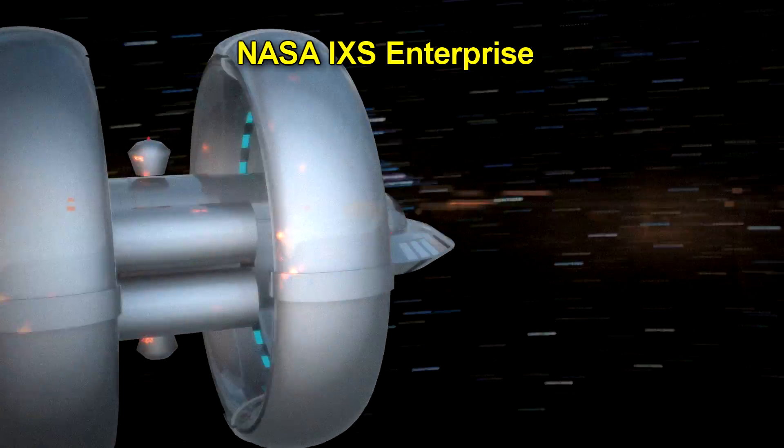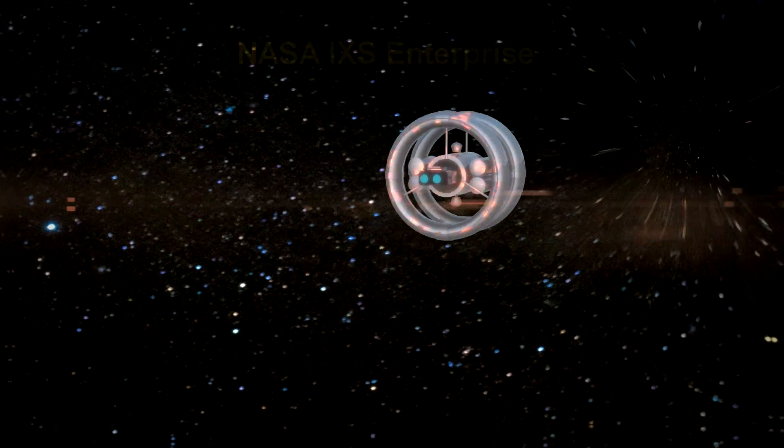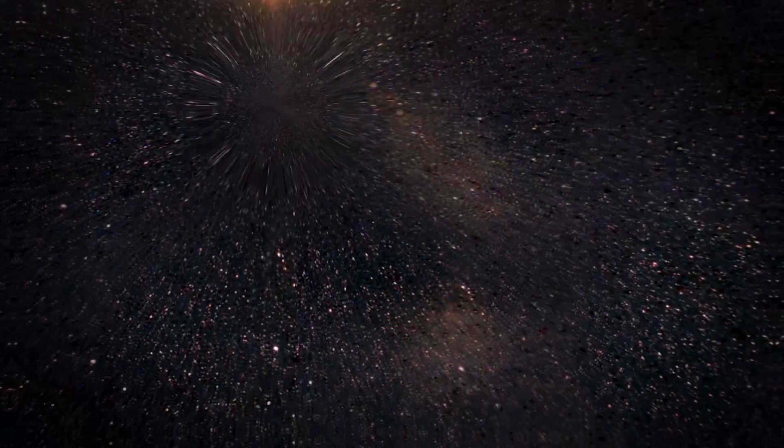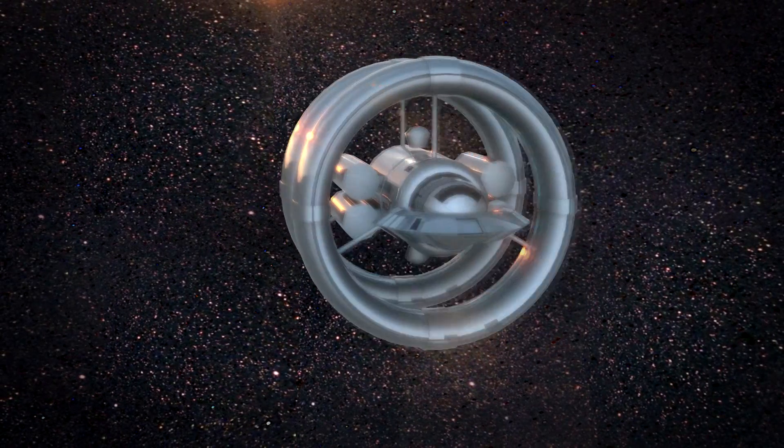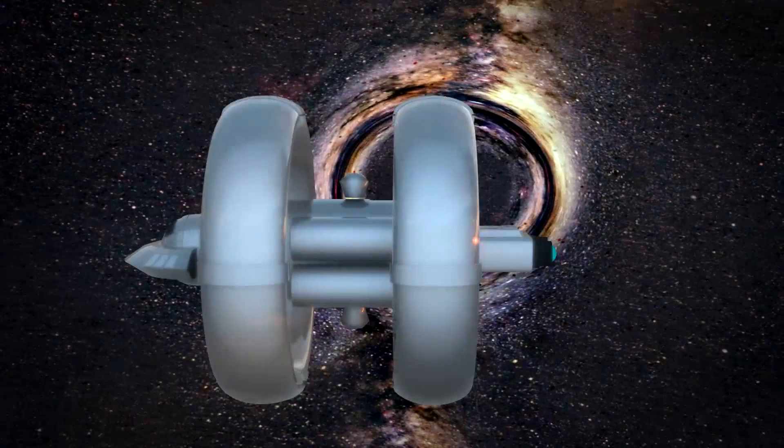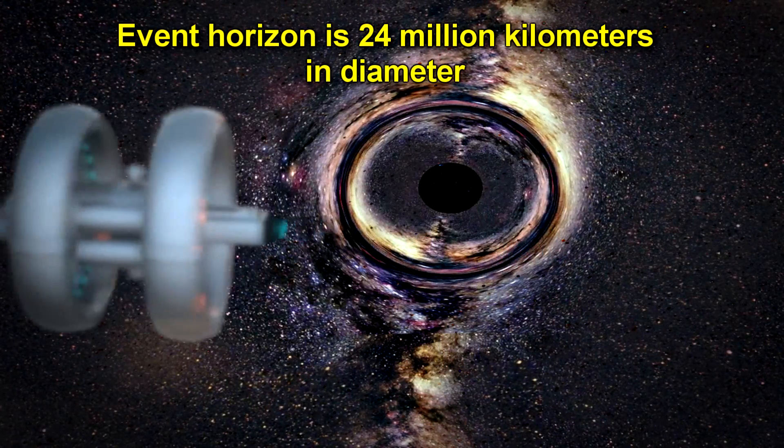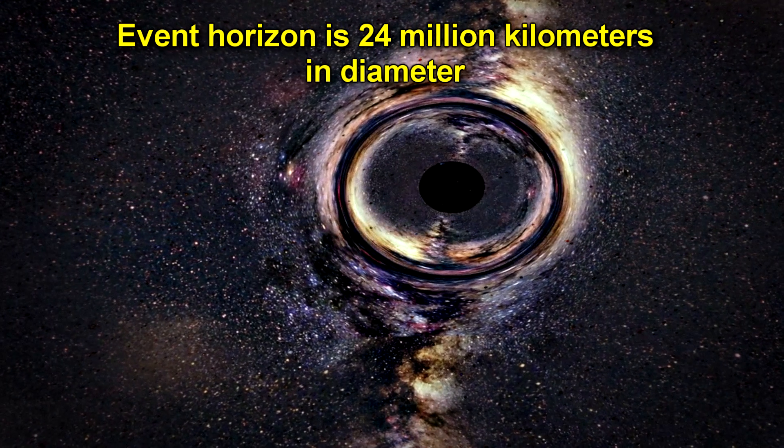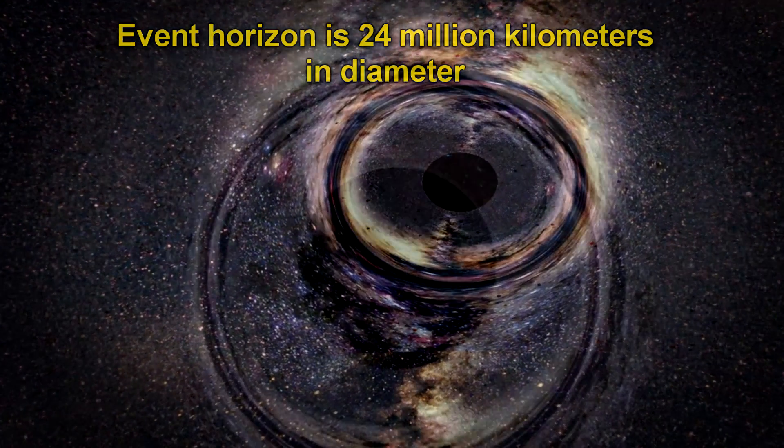We'll use NASA's hypothetical i-axis enterprise to get to Sagittarius A. It'll take us three years at a warp speed of 9,000 times the speed of light. When we arrive, we see that its event horizon is about 24 million kilometers in diameter, which is about 17 times the diameter of our sun.